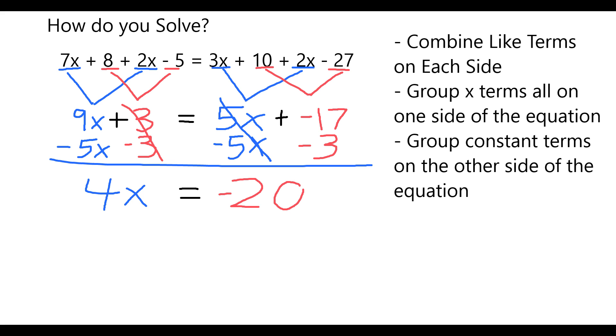If I know that 4 times x is equal to negative 20, a simple division will give me the answer. Dividing by 4 on each side is going to have the effect of getting x alone. 4 over 4 is equal to 1, or equivalently just 1x.